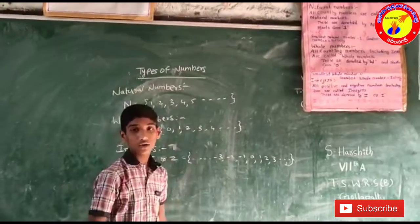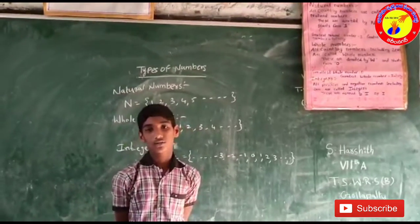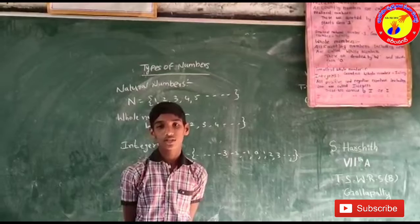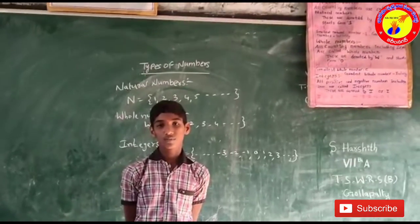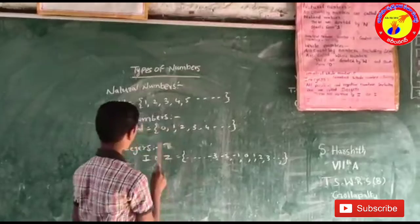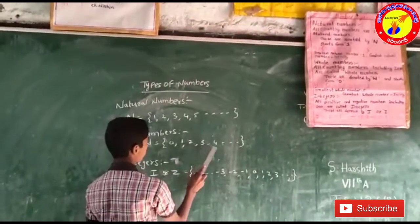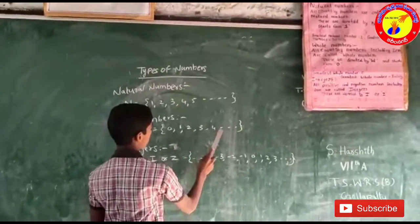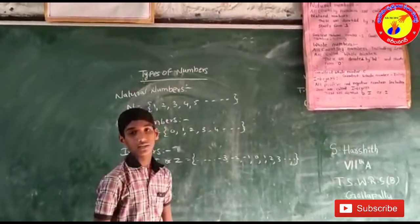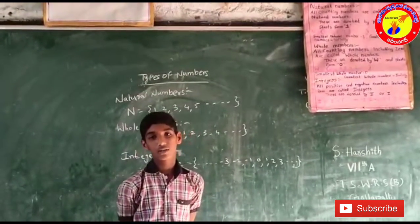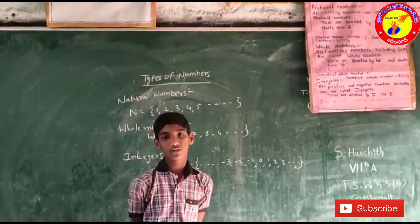Whole numbers — all counting numbers including 0 are called whole numbers. These are denoted by W and start from 0. For example, 0, 1, 2, 3, 4, 5, like this. The smallest whole number is 0 and the greatest whole number is infinity.